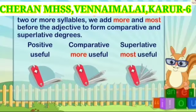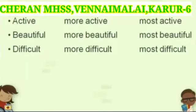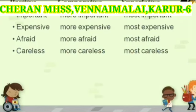Rule 5: When the positive is a long word of two or more syllables, we add 'more' and 'most' before the adjective to form comparative and superlative degrees. For example: useful, more useful, most useful. Active, more active, most active. Beautiful, more beautiful, most beautiful. Difficult, more difficult, most difficult. Important, more important, most important. Expensive, more expensive, most expensive. Afraid, more afraid, most afraid. Careless, more careless, most careless.